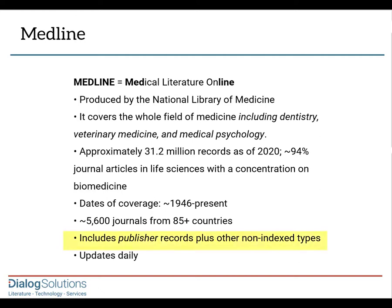Medline also includes what are called publisher records, which are early release electronic versions of articles posted before the full bibliographic information is known.